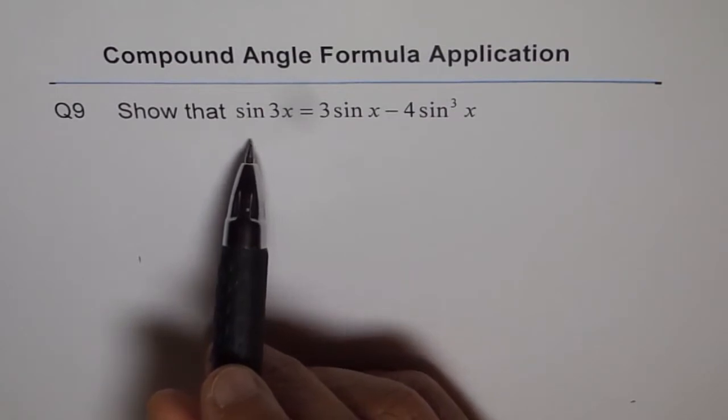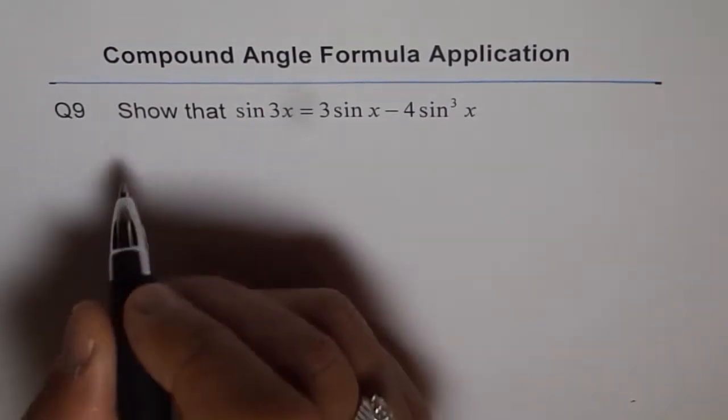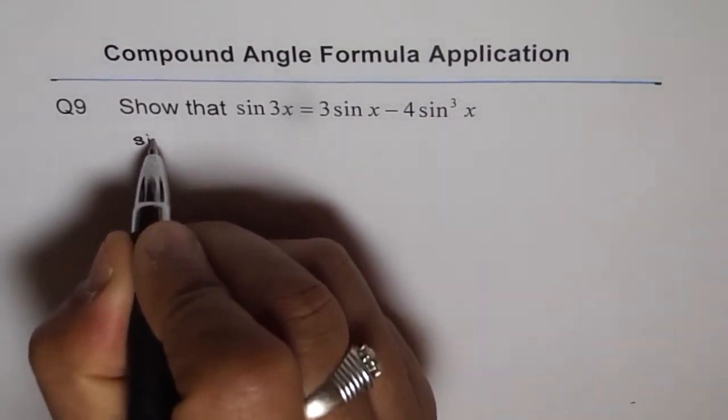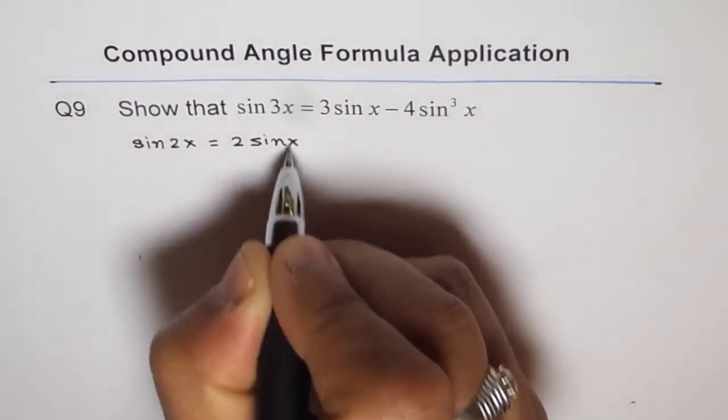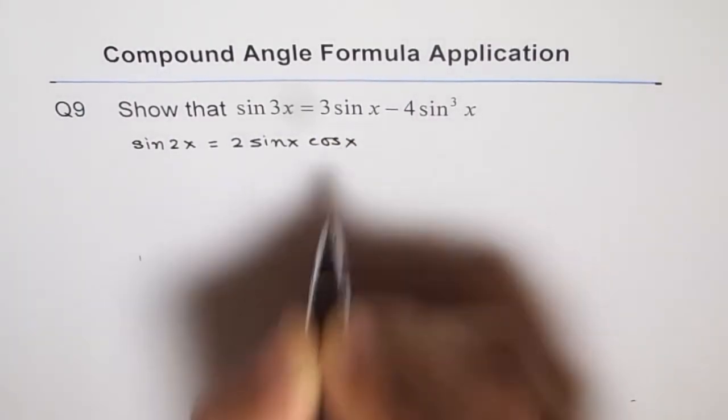Well, that means I need the formula for cos 2x and sine 2x, right? And so let's write down those formulas to begin with. So sine 2x formula for us equals 2 sine x cos x. So that's good.